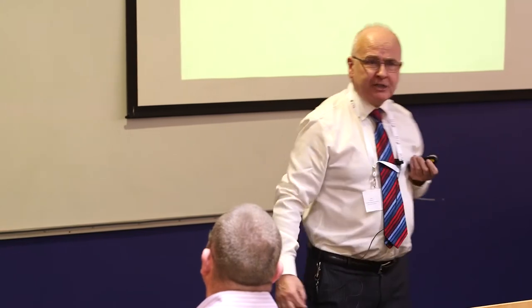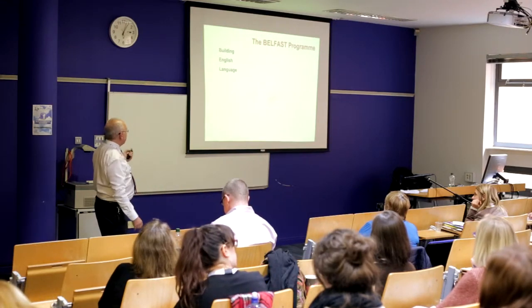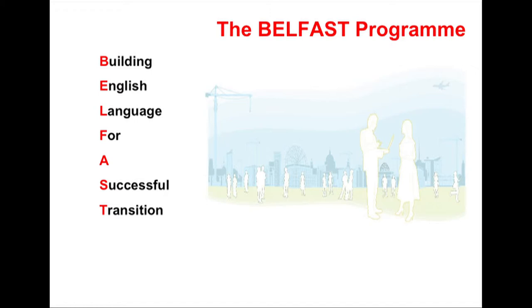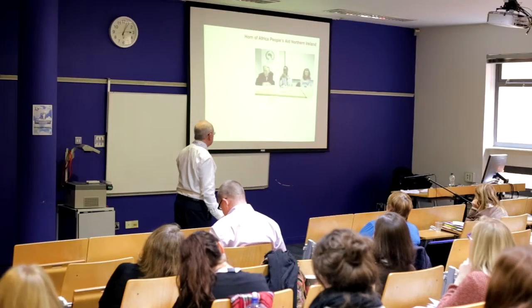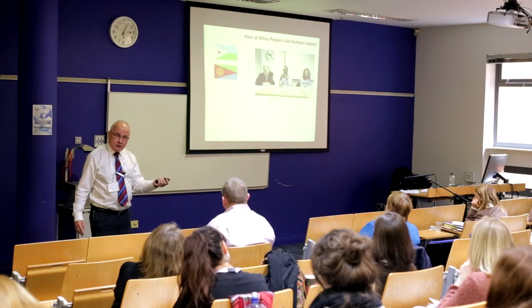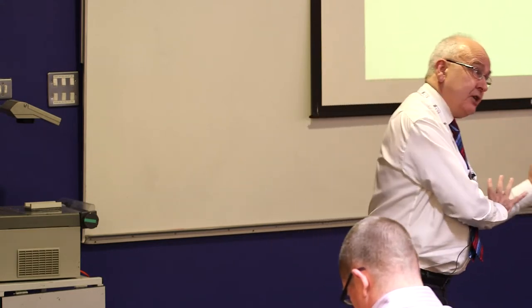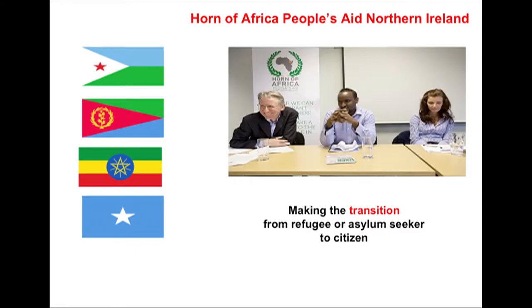I want to give you an example called the Belfast Programme. I came across an opportunity recently to build English language for a successful transition — it's important to get a good name. The Horn of Africa, People's Aid Northern Ireland. 700 people. They need an English language programme to help them make that transition into citizenship. They're from Djibouti and Eritrea, Ethiopia, Somalia — people who have often had a very disrupted educational experience and in some cases may not be literate in Arabic, let alone aspiring to learn English.